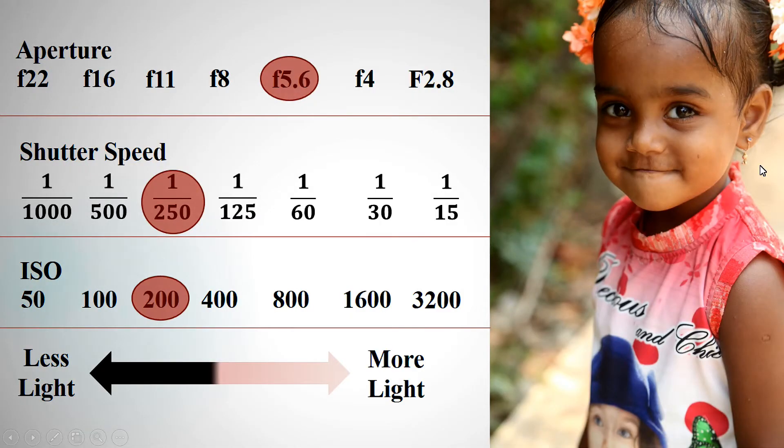If you want to use a one-stop scale, you can use an image as a reference. A correct exposure image is your target. For example, the correct exposure value: aperture is F5.6, shutter speed is 1/250, and ISO is 200.